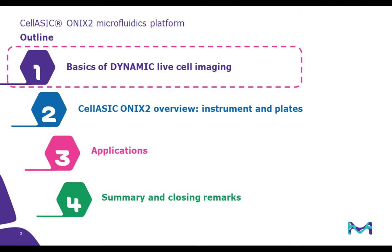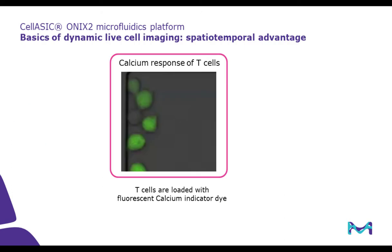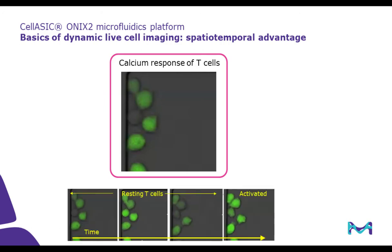Let's start with some basic background information on dynamic live cell imaging. It is very well established that live cell imaging offers tremendous biological insight over more traditional static imaging due to spatial and temporal information. For example, let's take a look at the static image in the middle of this slide. What you see is a bunch of T-lymphocytes which are loaded with a green calcium indicator fluorescent dye. Not much insight can be gained from such a static image, perhaps other than what appears to be different levels of dye uptake, as seen by different fluorescent intensities among the T-cells.